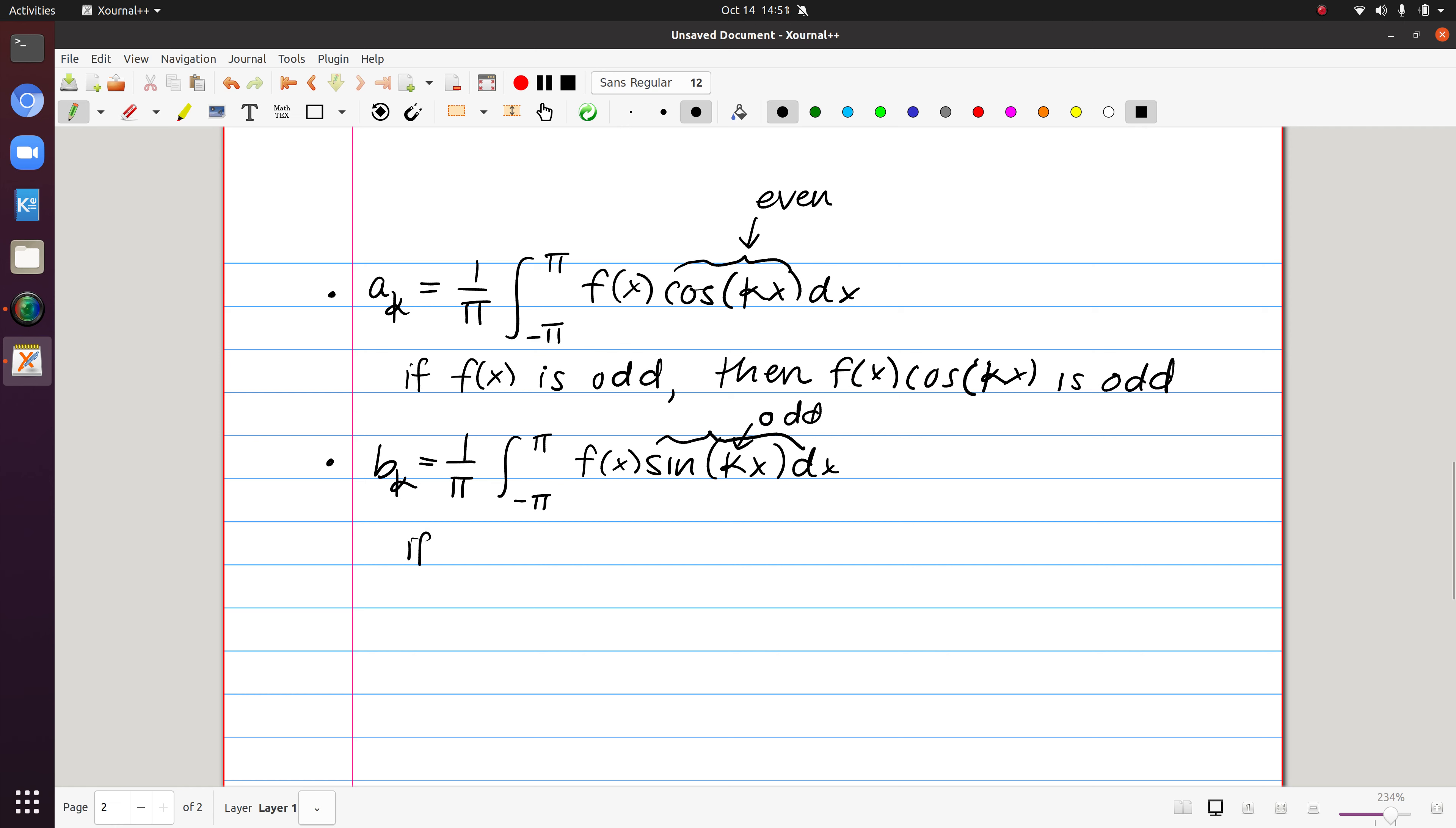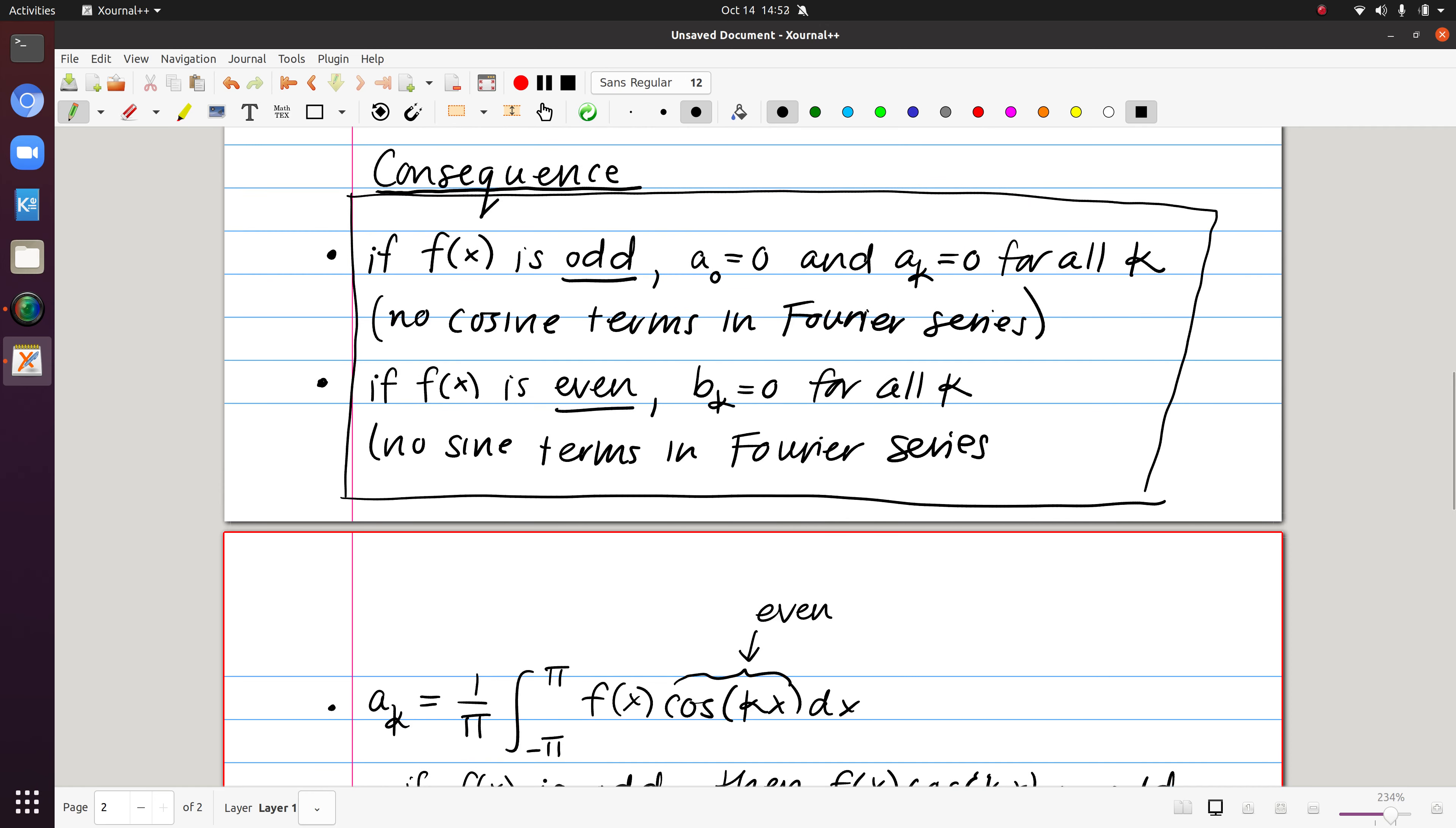So if we start off with the knowledge that f of x is even, then it would be that f times sine is a product now of an even and an odd function, which we said was odd. And again, the integral of an odd function from minus π to π is 0. So that demonstrates why for even functions, it's the b sub k terms that evaluate to 0.